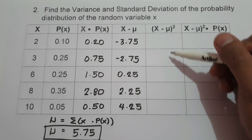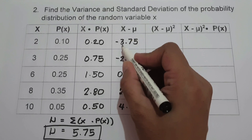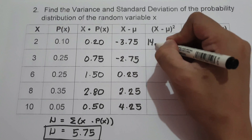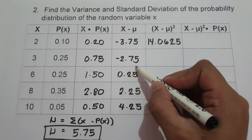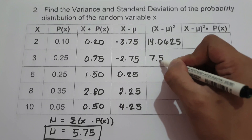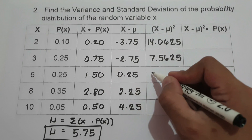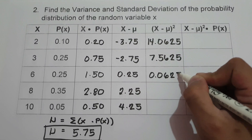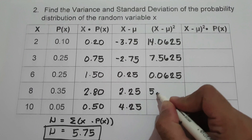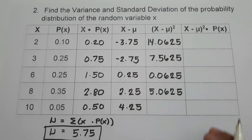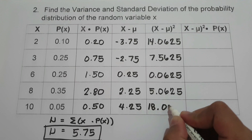Then we square each (x minus mean) value: negative 3.75 squared is 14.0625; negative 2.75 squared is 7.5625; 0.25 squared is 0.0625; 2.25 squared is 5.0625; and 4.25 squared is 18.0625.